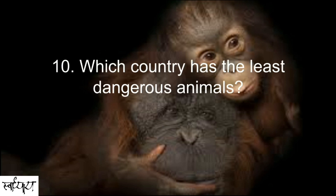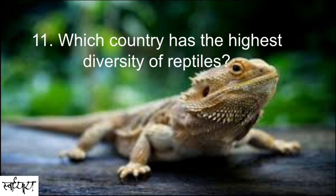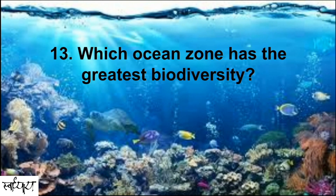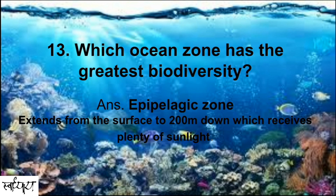Which country has the least dangerous animals? Answer: New Zealand. Which country has the highest diversity of reptiles? Answer: Australia. Which ocean zone has the greatest biodiversity? Answer: Epipelagic zone. This zone extends from the surface to 200 meters down and receives plenty of sunlight, which is why it has the greatest biodiversity among ocean zones.